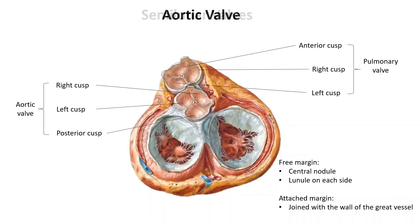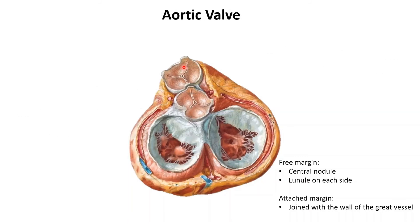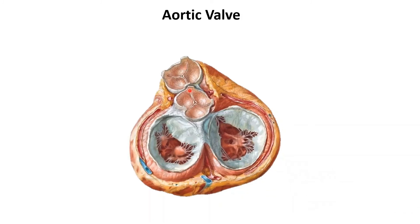Let's differentiate between the pulmonary valve and the aortic valve a little more. We've already discussed that the aortic valve is located posterior to the pulmonary valve. Another way of distinguishing it is through these vessels: there is a right coronary artery and a left coronary artery coming out from the aortic valve, which is a very distinctive feature.